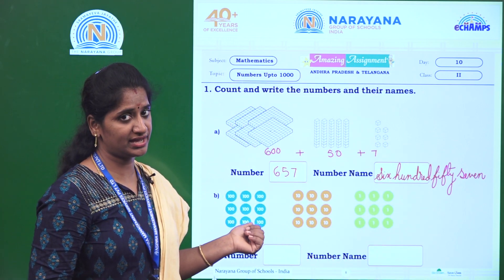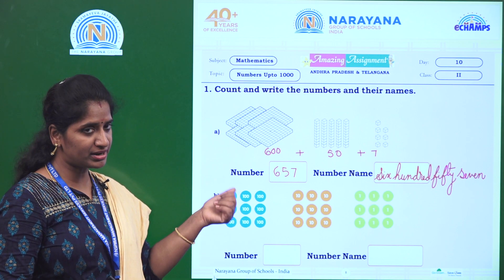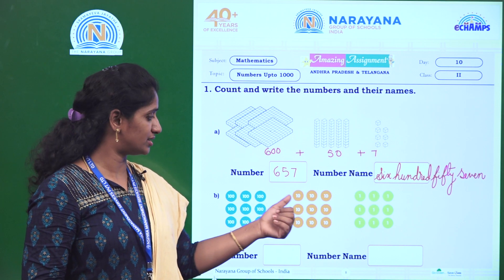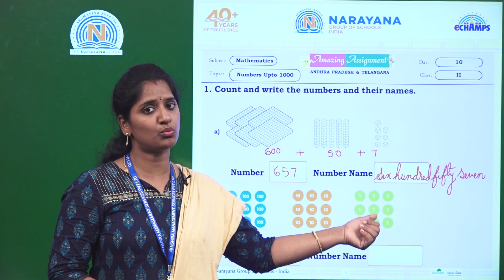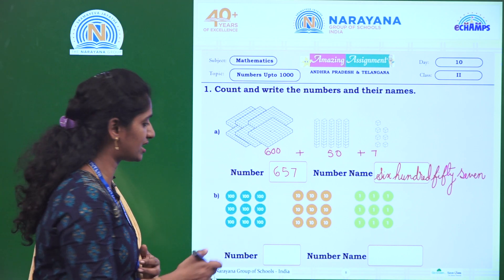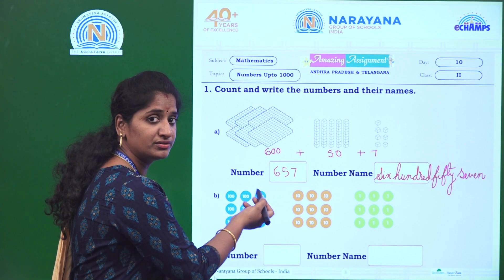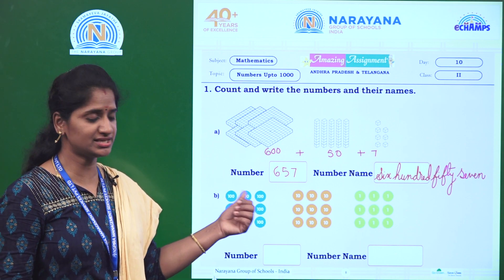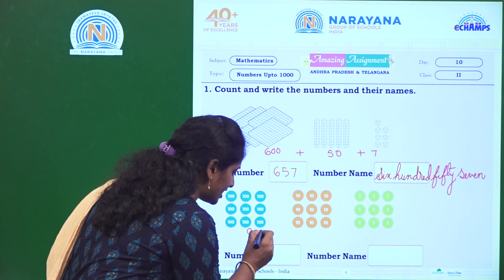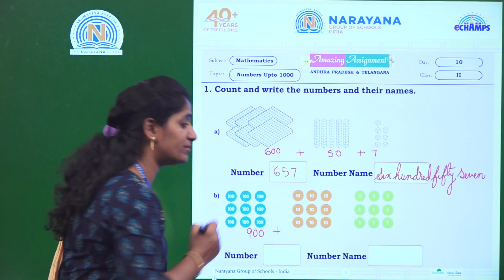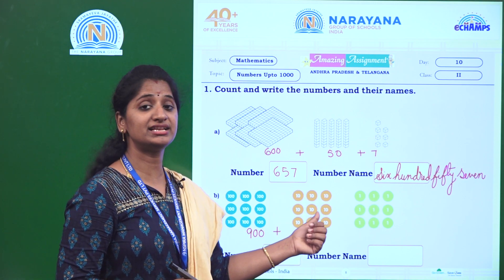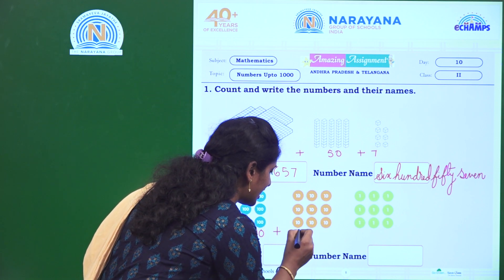The next one. Here they have given number discs. These are blue color as 100 number discs, this is the tens disc, and these are ones. Count how many 100 discs are given: 1, 2, 3, 4, 5, 6, 7, 8, 9. So, how many tens? 1, 2, 3, 4, 5, 6, 7, 8, 9. Again 9 tens, 90.